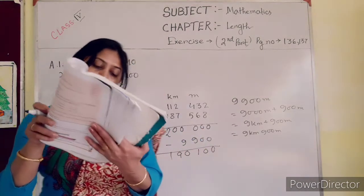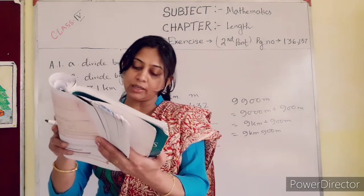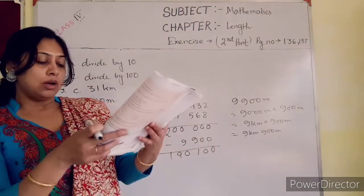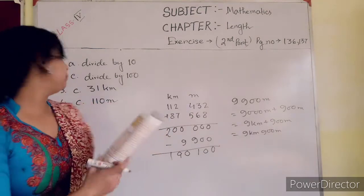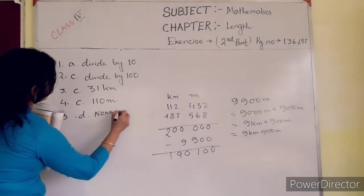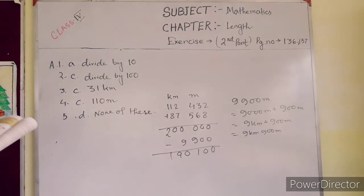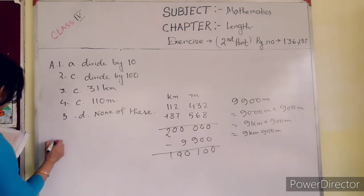Here, options are 101 kilometer, 100 kilometer, 199 kilometer. So answer is D, none of these. Answer is D, none of these, okay? Now the next page, page number 137.